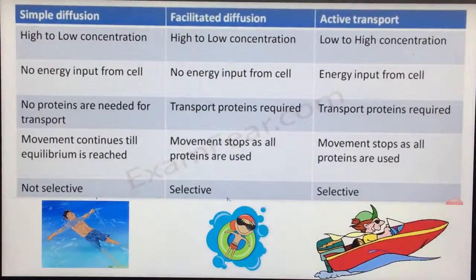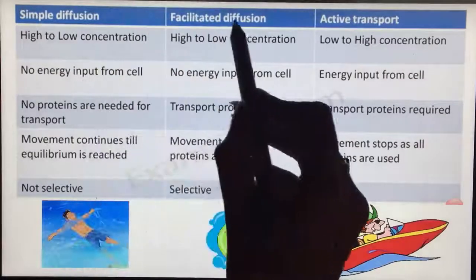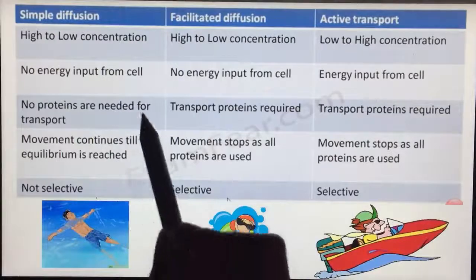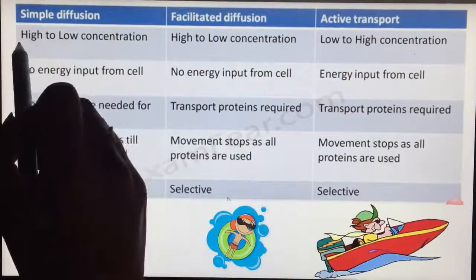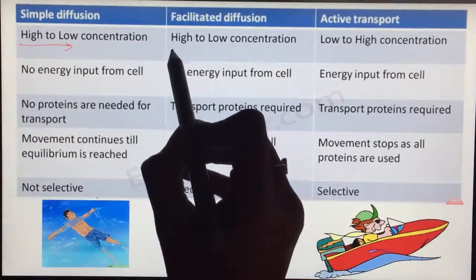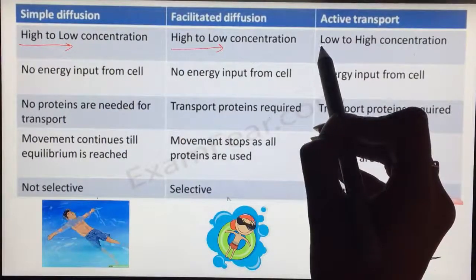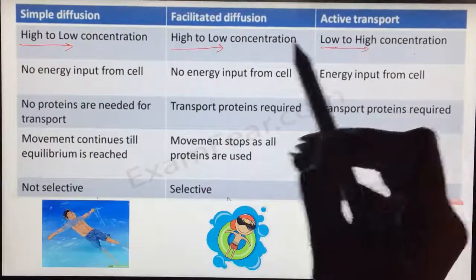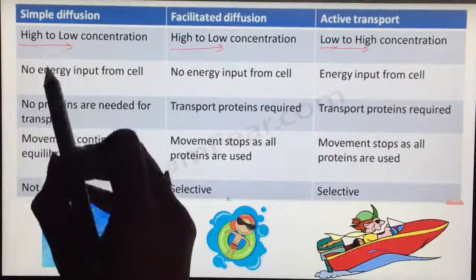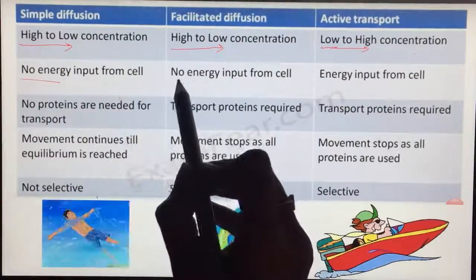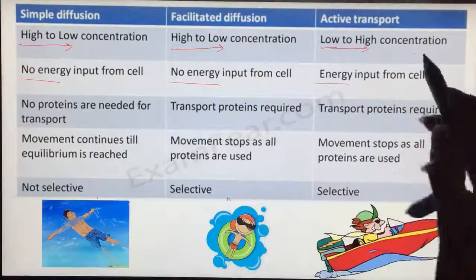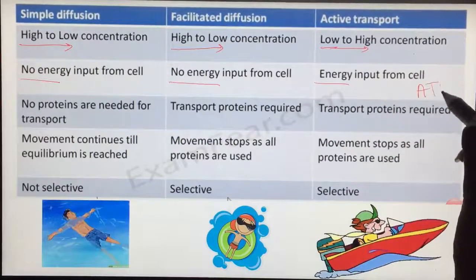Let's take a look upon the comparison table of simple diffusion, facilitated diffusion and active transport. In simple diffusion, the movement is from higher concentration to lower concentration. But in active transport, it's from lower concentration to higher concentration. In simple diffusion, no energy. In facilitated diffusion, no energy. But in active transport, it is required which is ATP.